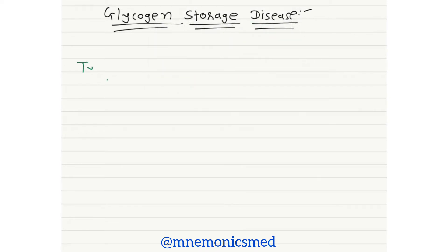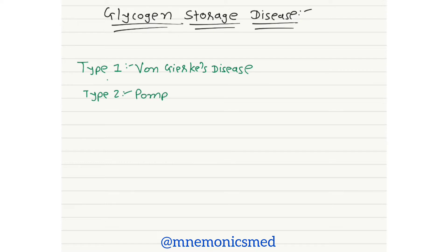Type 1 Glycogen Storage Disease is von Gierke's disease — you have to remember type 1 disease is von Gierke's disease. Now type 2 Glycogen Storage Disease is Pompe's disease — you have to remember Pompe's disease for the type 2 Glycogen Storage Disease.